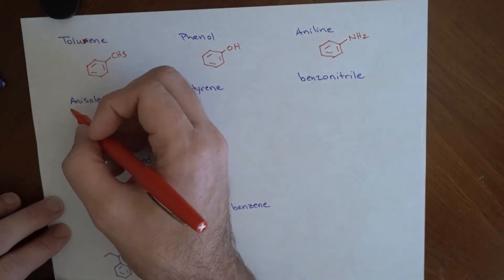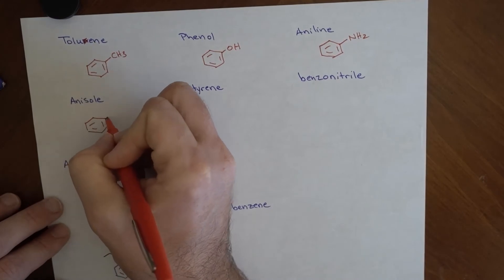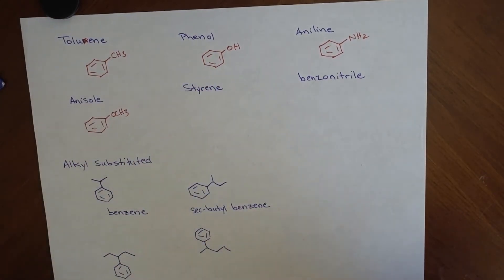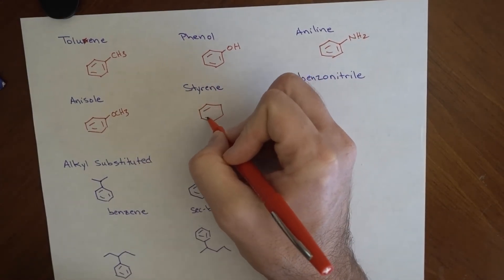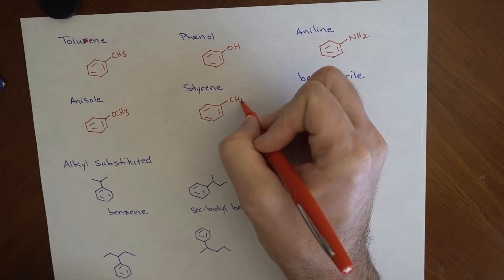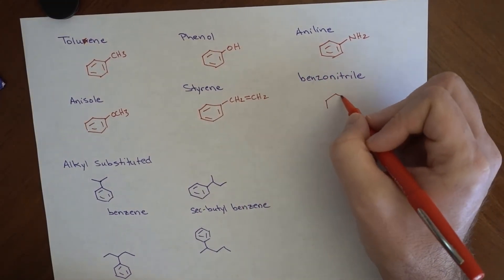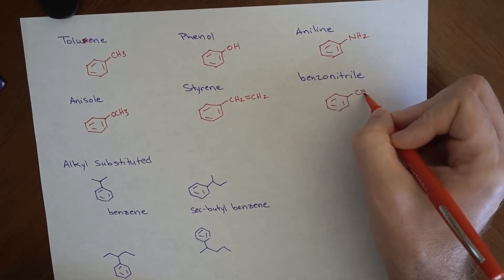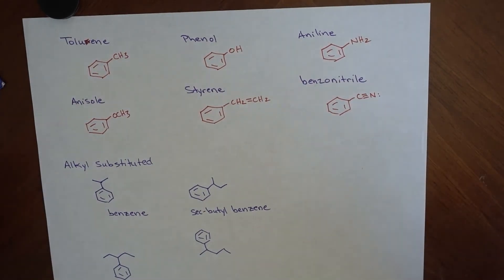Aniline looks like this. Anisol ends up having a methoxy. Styrene looks like this. And then benzonitrile ends up looking like this. There are others. We've seen benzoic acid and some other things. But these are some common ones that you're going to sort of want to commit to memory.